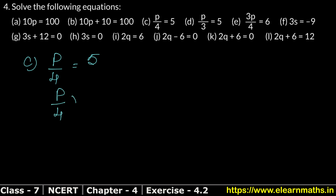We multiply p upon 4 by 4, and the right-hand side is also multiplied by 4. The 4s cancel on the left side, leaving p. On the right, 5 times 4 is 20. So p equals 20 is the answer.